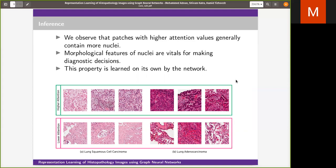In the figure, the top row depicts the higher attention patches, which are important patches, and the lower row consists of lower attention patches or less important patches. The interesting property that we noticed is that higher attention patches have high nuclear density. This property is learned by the network on its own without any supervision.